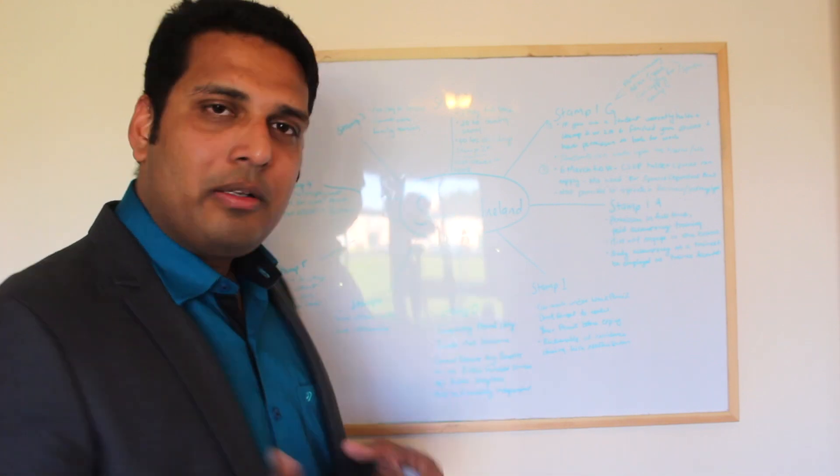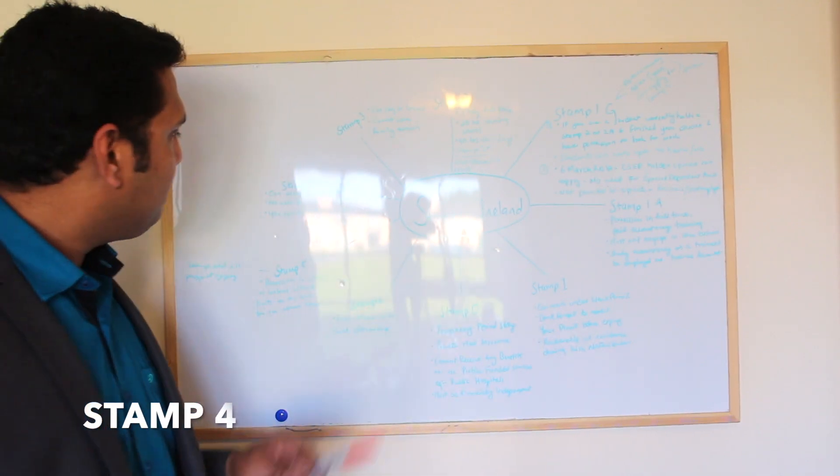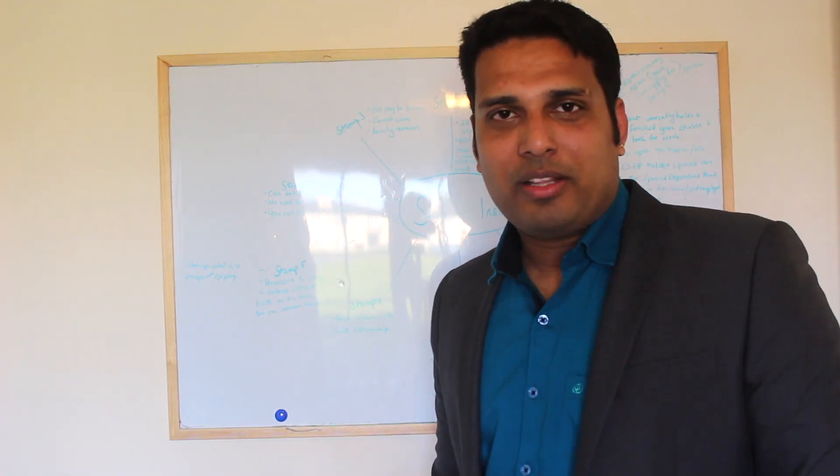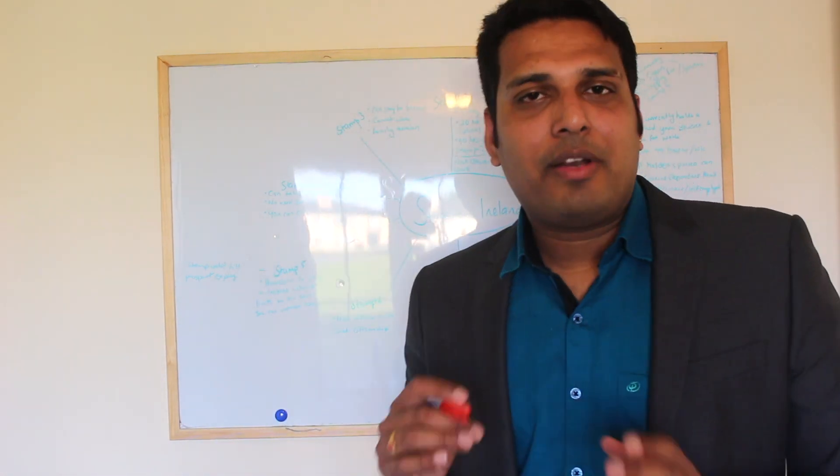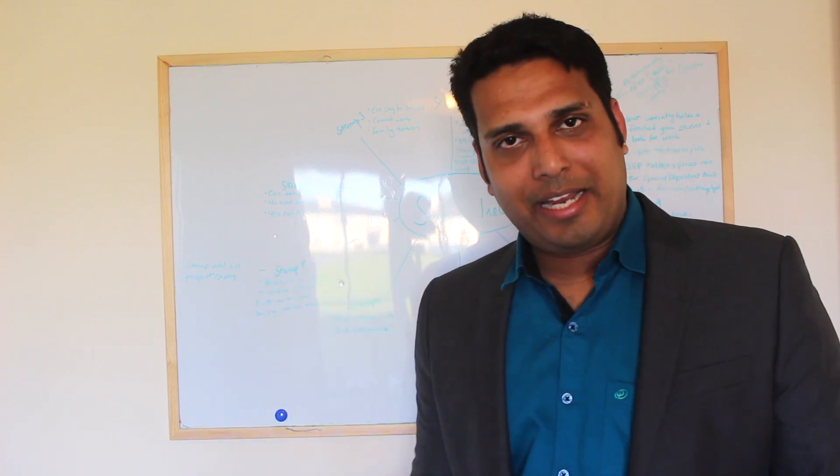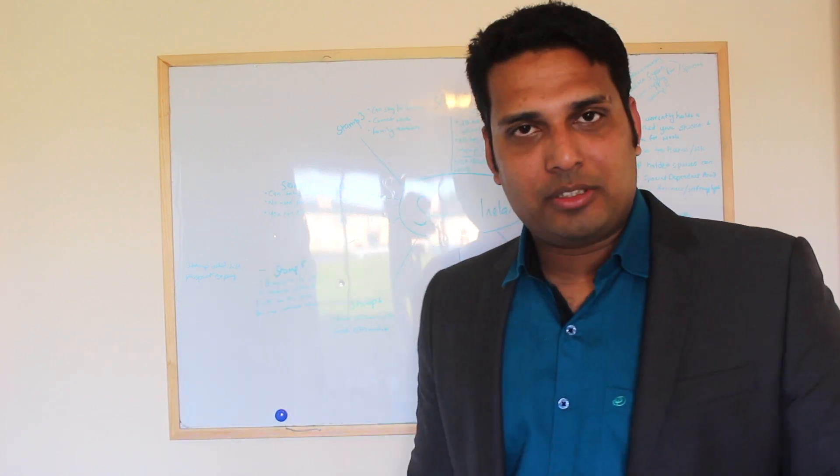Stamp 4 is the next stamp. Stamp 4, you can take after 2 years of critical skills work permit. You can take any sort of employment, any sort of work permit. You can establish or operate a business. That is stamp 4.